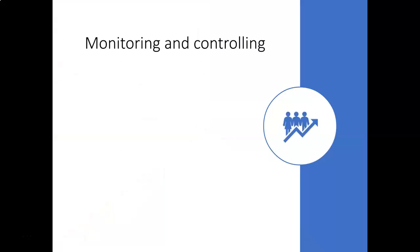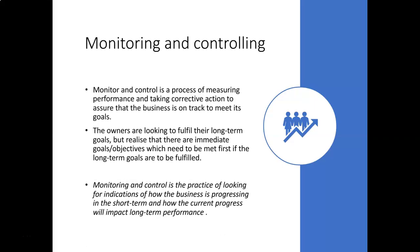To start off this presentation, this is a topic called monitoring and controlling. Monitor and control is a process of measuring performance and taking corrective action to assure that the business is on track of its goals. The owners are looking to fulfil their long-term goals but realise that there are immediate goals and objectives which need to be met first. Monitoring and control is the practice of looking for indications of how the business is progressing in the short term and how the current process will impact long-term performance.